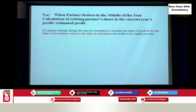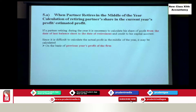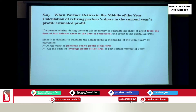If a partner retires during the year, it is necessary to calculate his share of profit from the date of last balance sheet till the date of retirement, and it is credited to him. Since it is difficult to calculate the actual profit, it is calculated based on certain important aspects. Number one: based on the previous profit of the firm — we assume the same profit will be earned this year, then calculate his share up to that date. Number two: average profits — we take profits of some previous years, calculate the average profit, and based on that calculate his share.